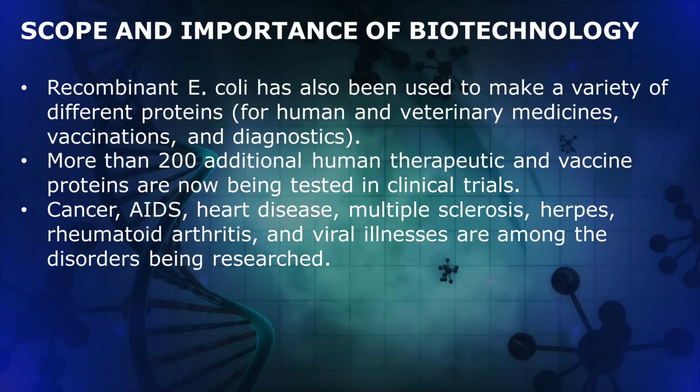More than 200 additional human therapeutic and vaccine proteins are now being tested in clinical trials. Disorders being researched include cancer, AIDS, heart disease, multiple sclerosis, herpes, rheumatoid arthritis, and viral illnesses.